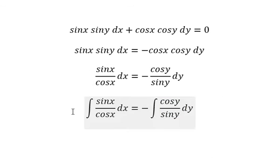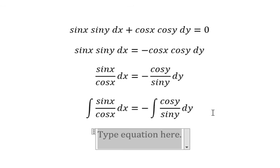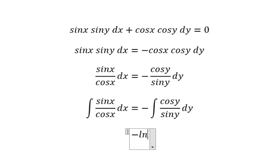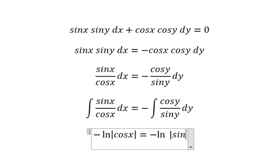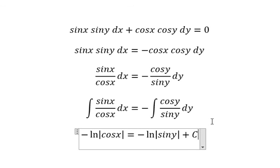This gives negative ln of the absolute value of cosine x. On the other side, we get negative ln of the absolute value of sine y plus c.